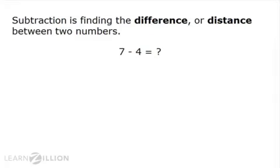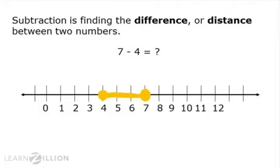7 minus 4 can be represented as the space or distance between 4 and 7. If you count the distance or the spaces between these two numbers, you find that 7 minus 4 equals 3. The difference is a distance of 3 units.